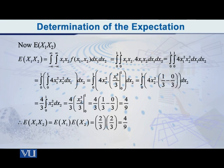The answer that we obtained just now for E(X1 times X2). Therefore, we may conclude that in this particular problem, the random variables x1 and x2 are independent.